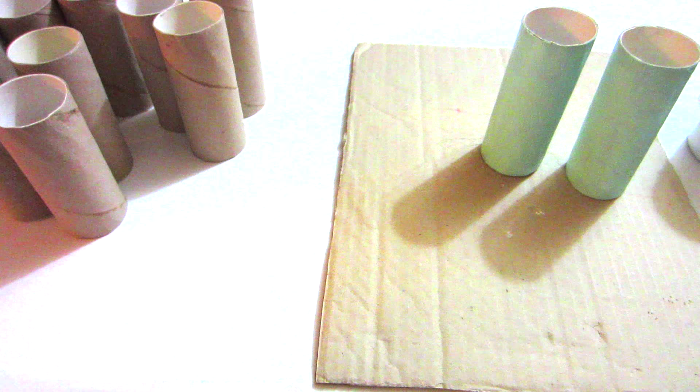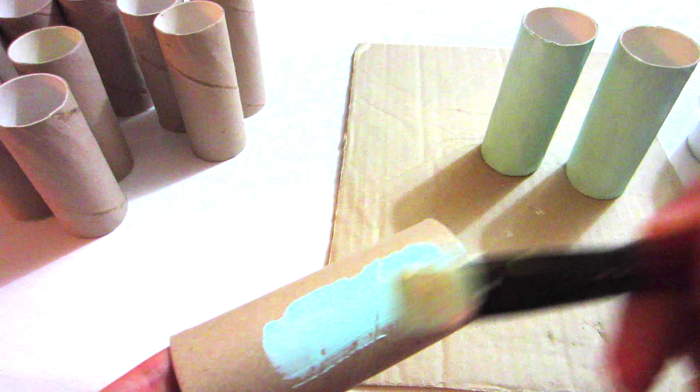You're going to need 12 toilet paper rolls and paint them turquoise by mixing a tiny bit of dark green paint into white paint. Here I'm using acrylic paint.